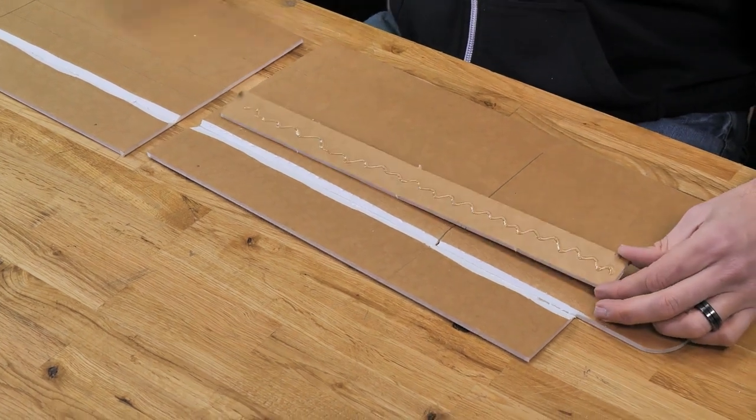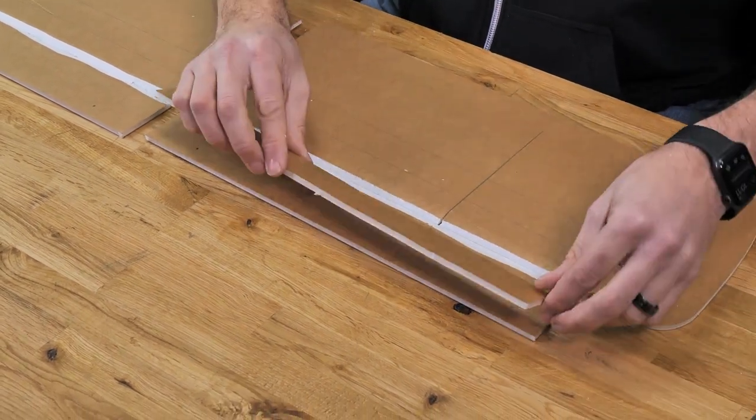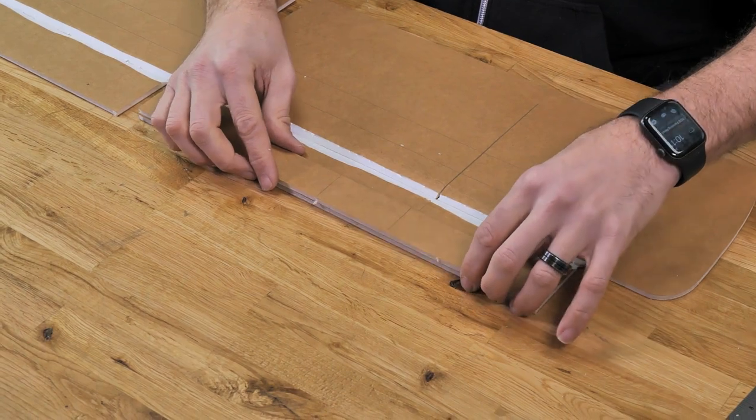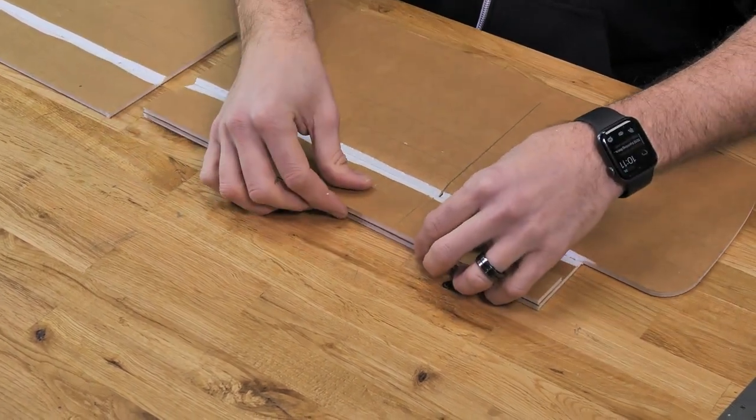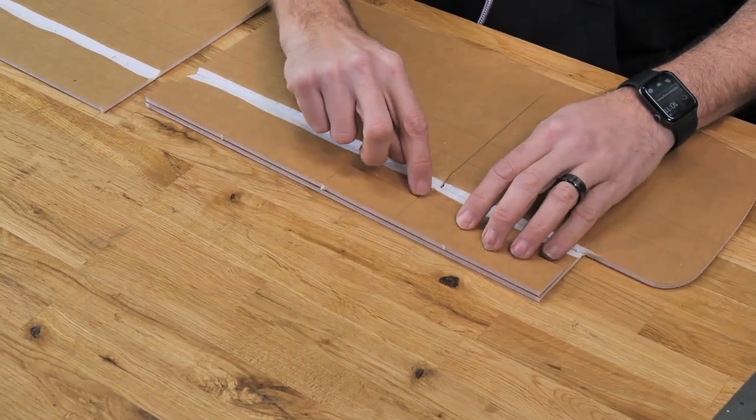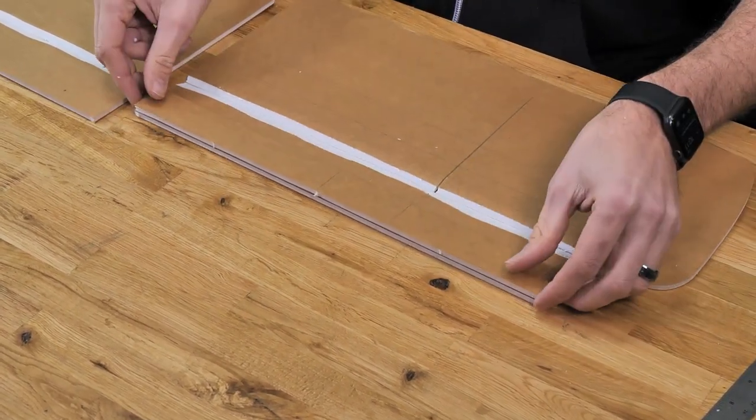We'll flip it over. Again, we're going to line it against the back trailing edge of the lower surface of the wing, making sure that the score cut and the score cut on the bottom surface of the wing line up.